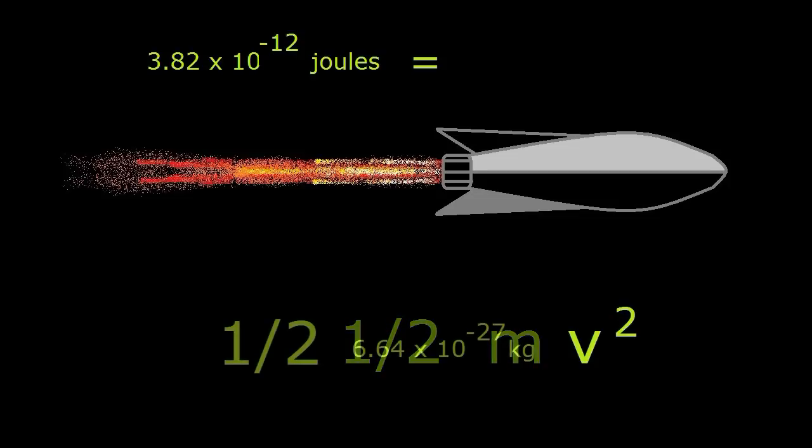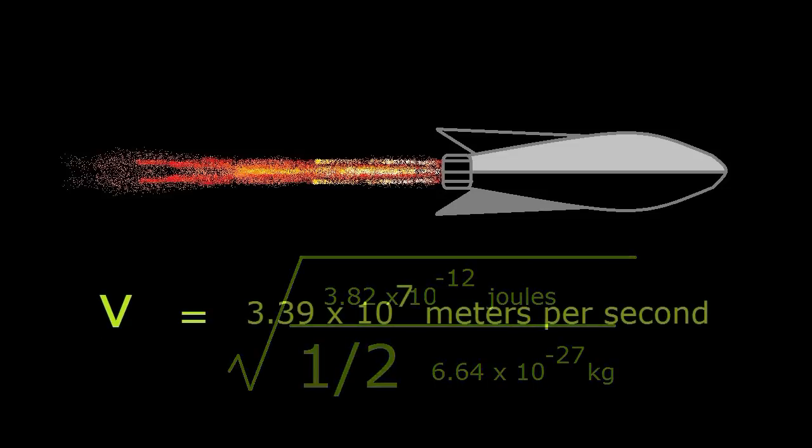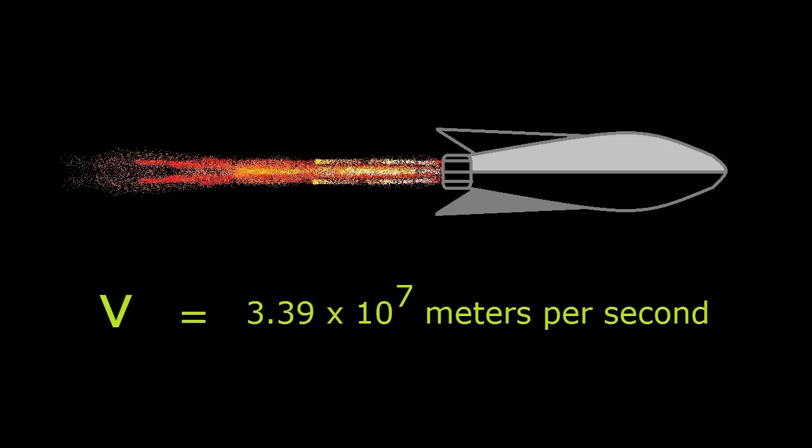M will be the mass of an alpha particle. Rearranging the equation and solving for V, we get 3.39 times 10 to the 7th meters per second, which is 0.113 of light velocity, more than a tenth of light speed.